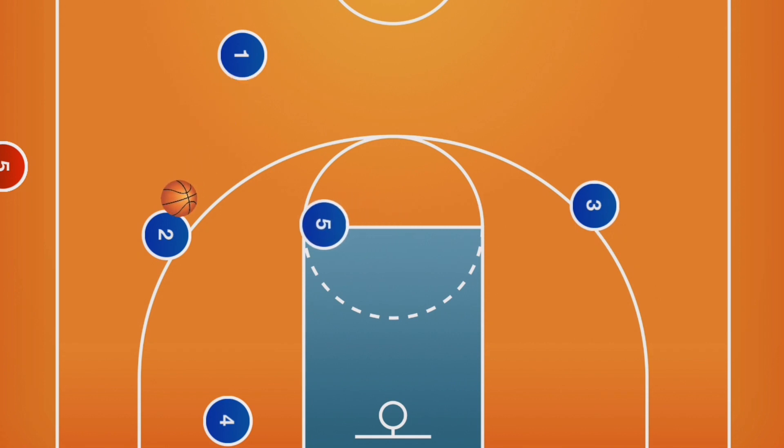Now let's say the wing passes to the short corner. Player 4 will turn and face the hoop, always looking to score. The first passing option is player 5 diving to the hoop. Players 4 and 5 need to look for each other as this is a strength of the high-low action. If there is no point of attack, swing the ball.